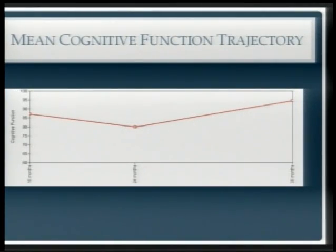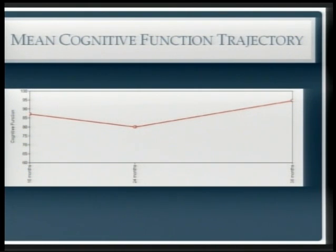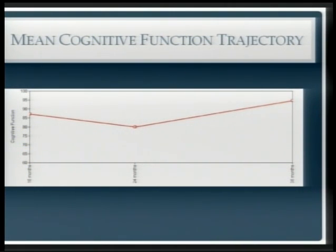The first thing to do is just look at your data. This figure shows cognitive function on the y-axis and time on the x-axis, measured at 16 months, 24 months, and 36 months. The average cognitive score dipped down at 24 months and then increased again at 36 months. It's important to look at this, because if you had more time points it would probably look less linear — and if the trajectory is not linear, for example it declines slowly and then increases rapidly in a quadratic pattern, you need to think about that when modeling your outcome.